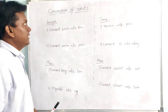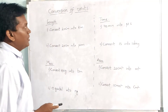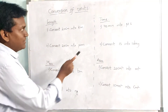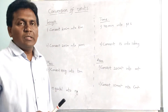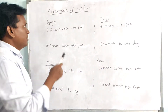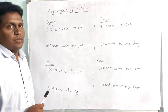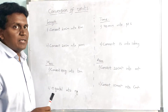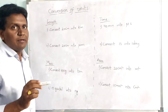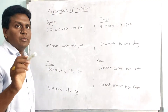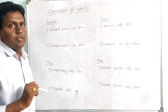In this session, let us see the conversion of length, mass, time, and area. We know the SI unit of length is meter. So to convert length, first we have to convert the given unit into meters. Meter is the SI unit of length.